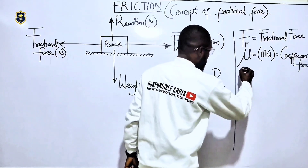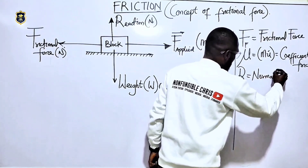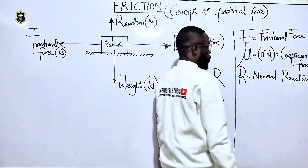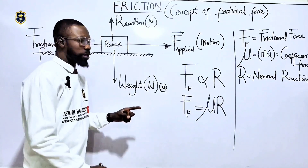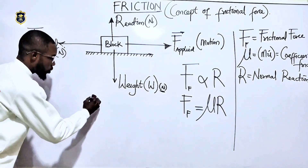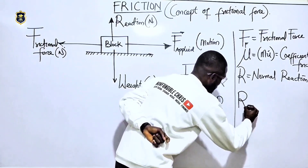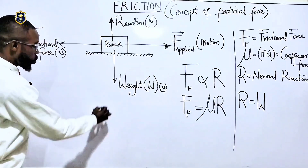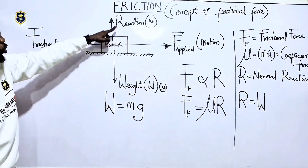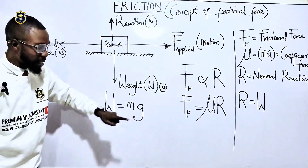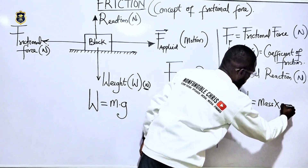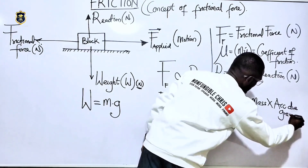The normal reaction R is in newtons, and the frictional force is also in newtons. For bodies on a smooth horizontal plane, the normal reaction is equal to the weight of the body. The weight is given as W = mg, where m is mass and g is acceleration due to gravity. So the normal reaction R equals mg.